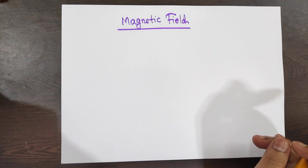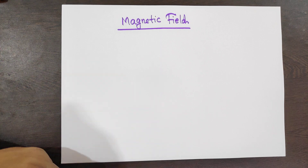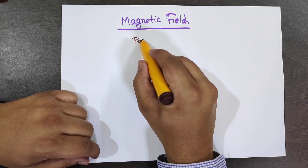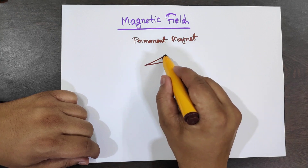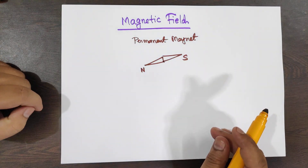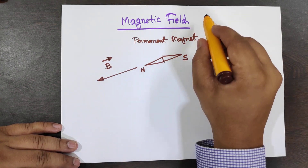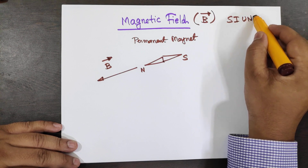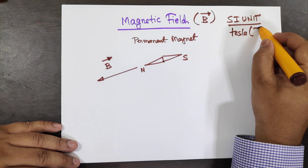There is a strange type of field known as magnetic field. We view magnetic field in such a way that there is a permanent magnet having a north pole and a south pole — this is a magnetic needle. Magnetic field is such a field that this magnetic needle points in the direction of the field B. We denote this magnetic field by B and it has the SI unit of Tesla, abbreviated as T.